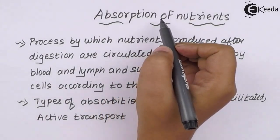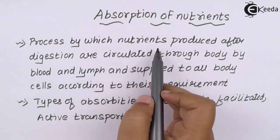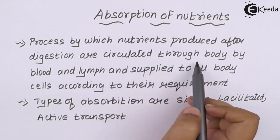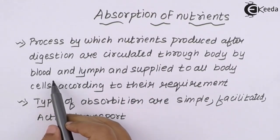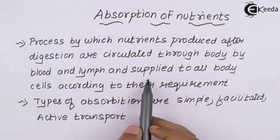Absorption of nutrients: the process by which nutrients produced after digestion are circulated through body via your blood or portal circulation or through your lymph node circulation and they are supplied to all body cells.